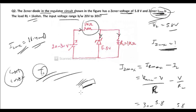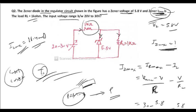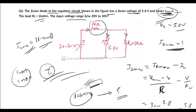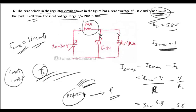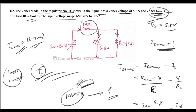This is Part 1 of the video. Tomorrow I will upload Part 2 of zener diode as a voltage regulator, in which we will see the other cases — when Vi is variable and RL is fixed, and when Vi is variable and RL is also variable. All the very best, we will see you in the next video.